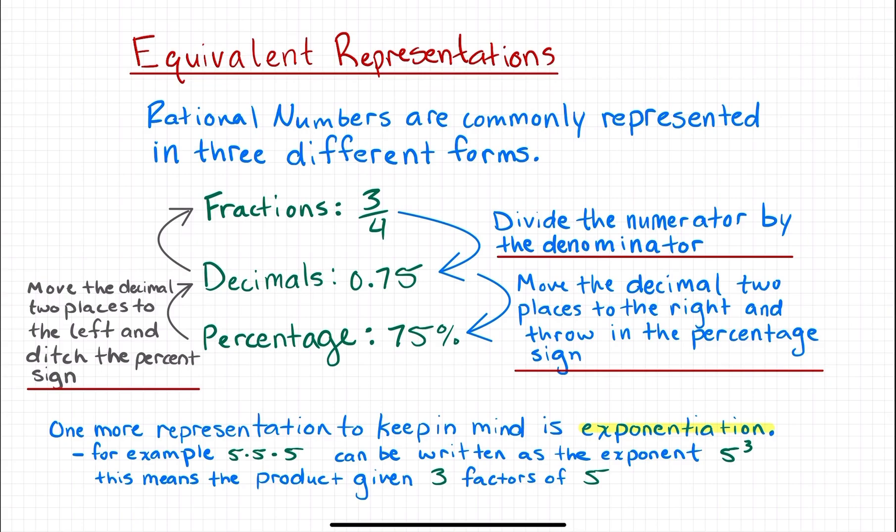The next topic we're covering is equivalent representations. Rational numbers are commonly represented in three different forms. One form is fractions. For example, 3 over 4. This is a fraction, also called a ratio.